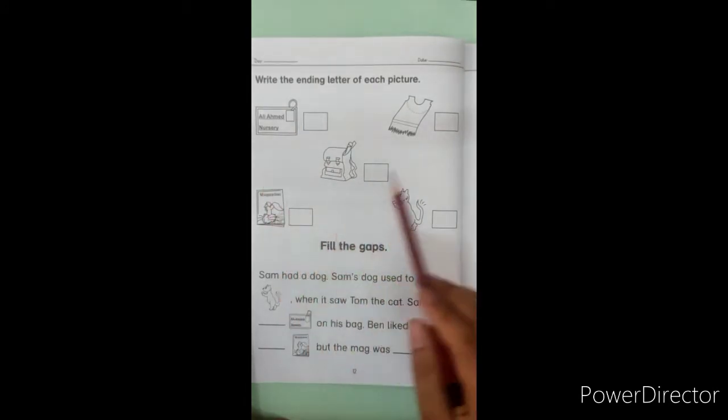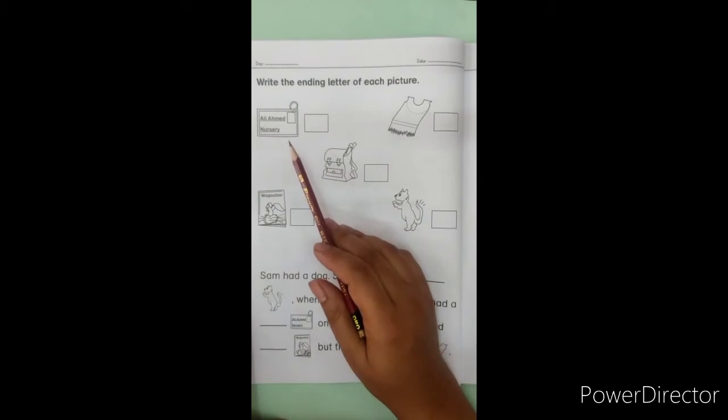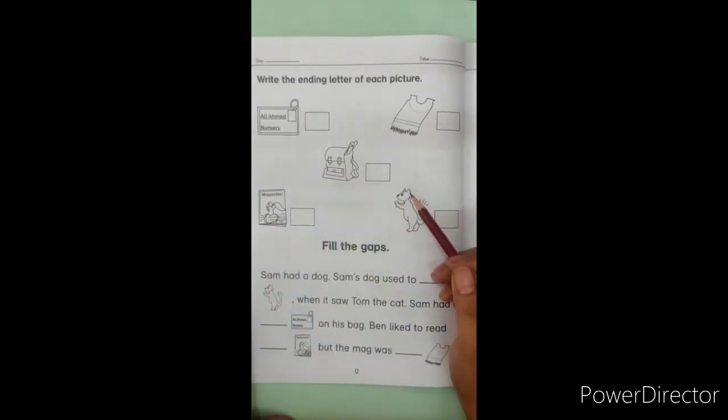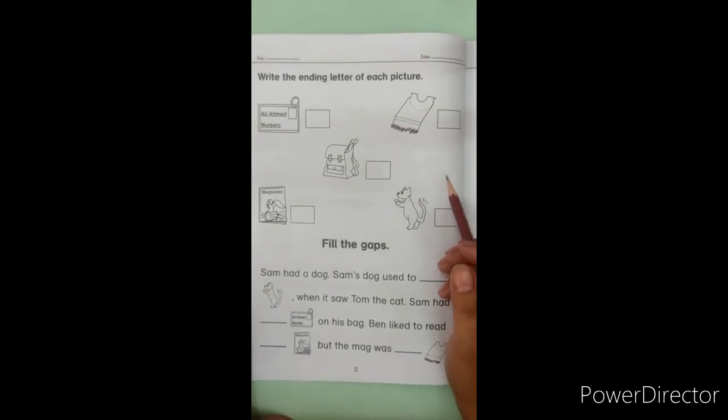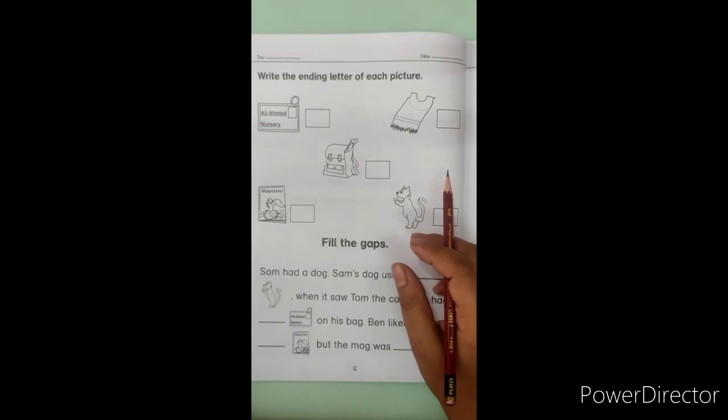Here you can see some pictures. You have to write their ending sound. Say each picture. You have to see what comes at the last. Ending sound, for example, is the last sound. The last word that comes in your mouth, that is the ending sound. Right?